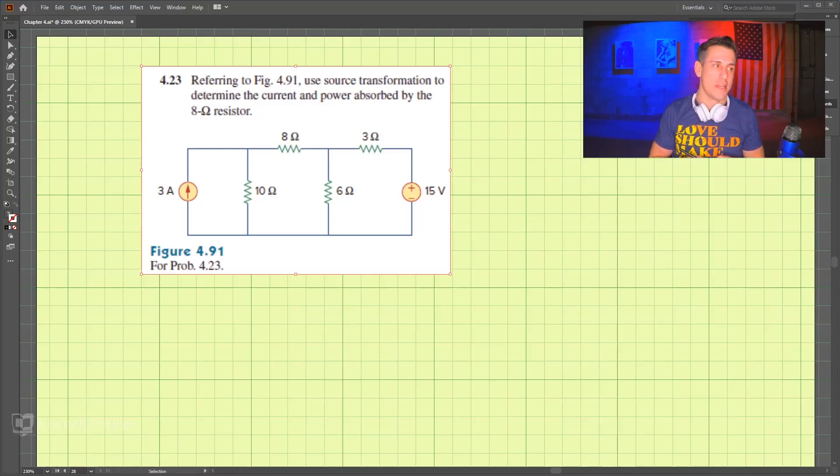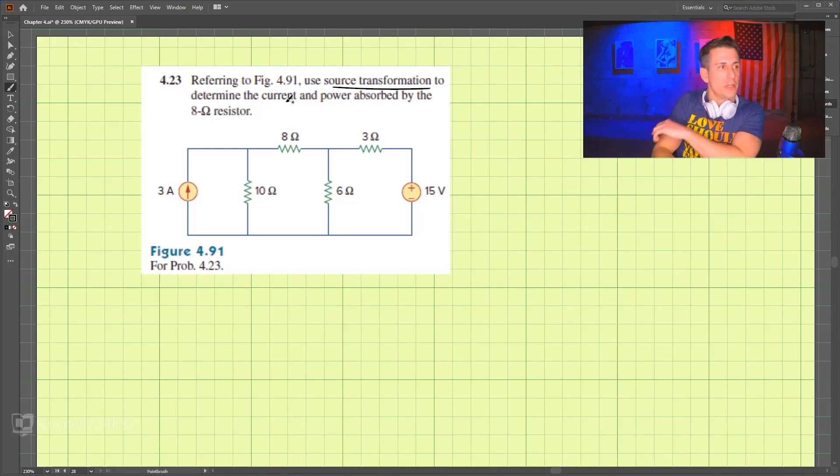This is problem 423, and we are looking to use source transformation to determine the current and the power absorbed by the 8-ohm resistor, the 8-ohm resistor right here.